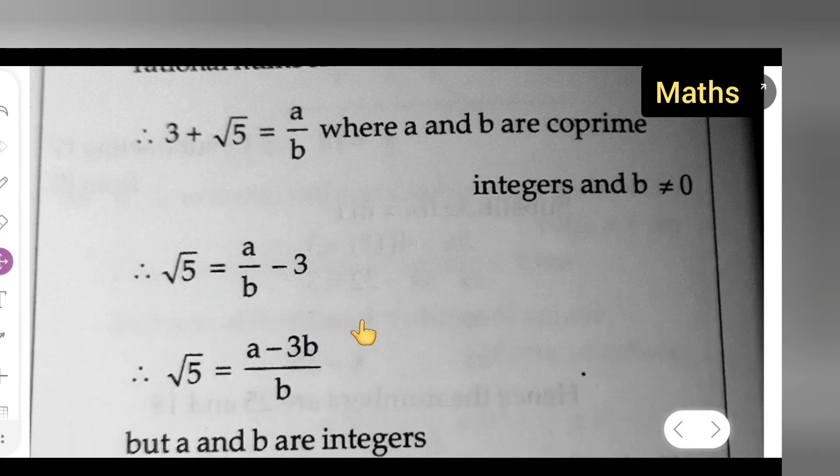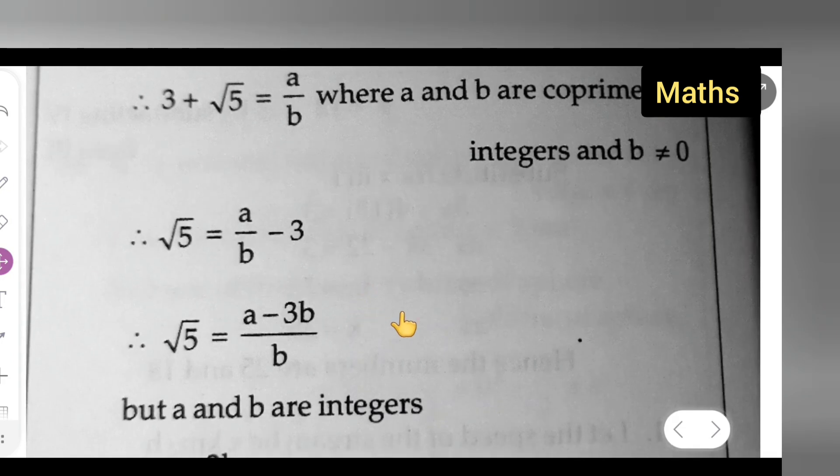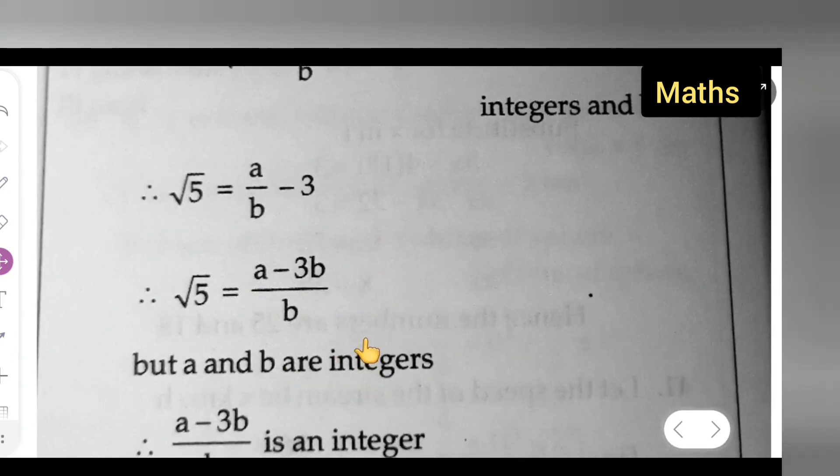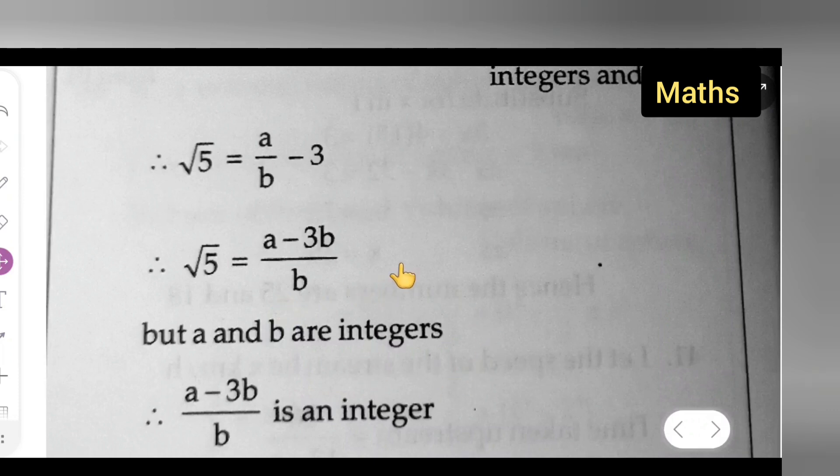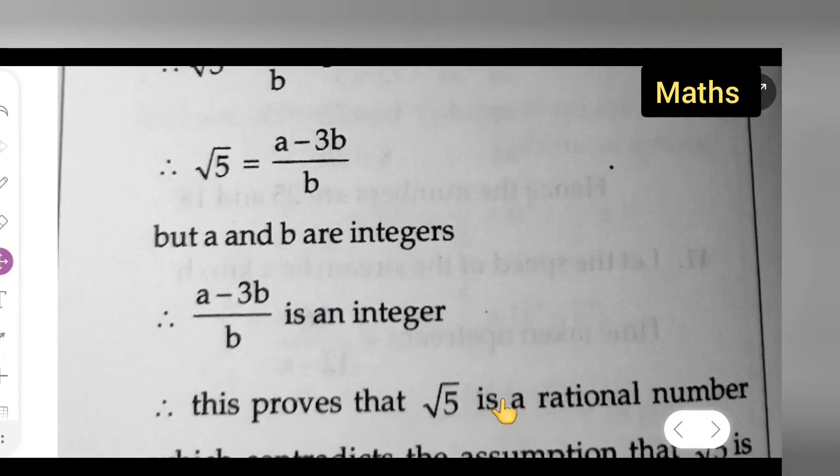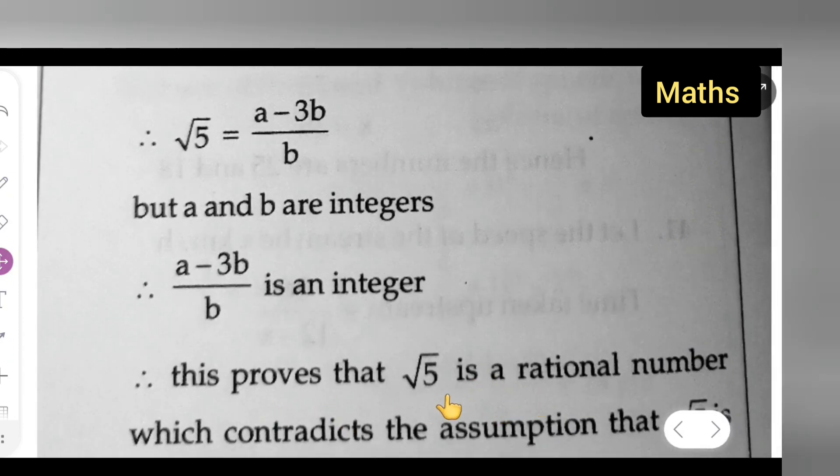So write down: but a and b are integers. So if a and b are integers, then you can say a minus 3b upon b is an integer.